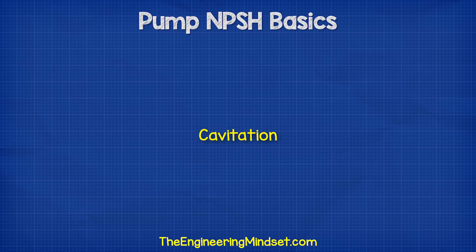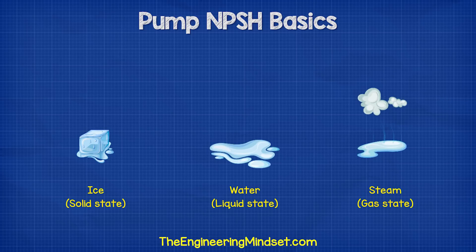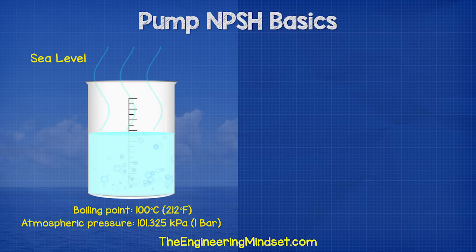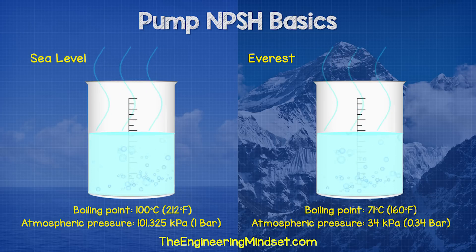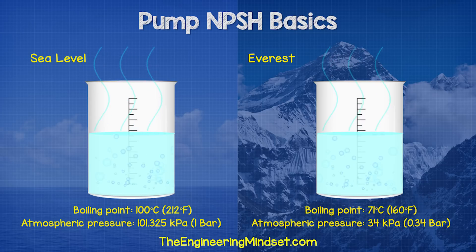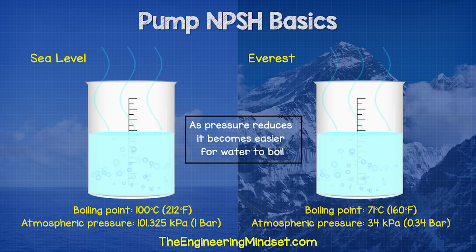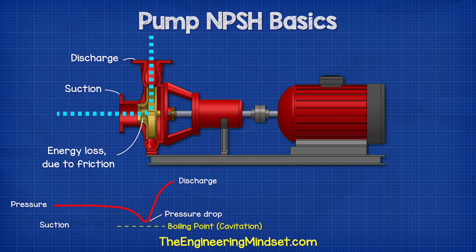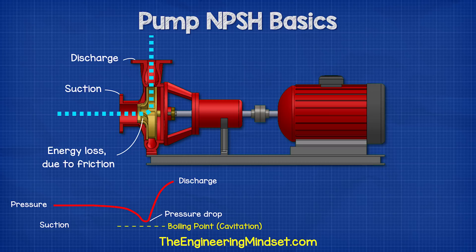So what is cavitation? Water can turn from a liquid state into steam or a gas state. We know that water boils at around 100 degrees Celsius at sea level, which has an atmospheric pressure of 101.325 kPa. But if we went to the top of Mount Everest, water boils there at just 71 degrees Celsius because the atmospheric pressure has reduced to 34 kPa. As atmospheric pressure reduces, it becomes easier for water to boil. At the suction inlet of the pump, there is going to be a pressure drop, and if this pressure is less than the vapor pressure of the liquid being pumped, the water can reach boiling point — when this happens, cavitation occurs.